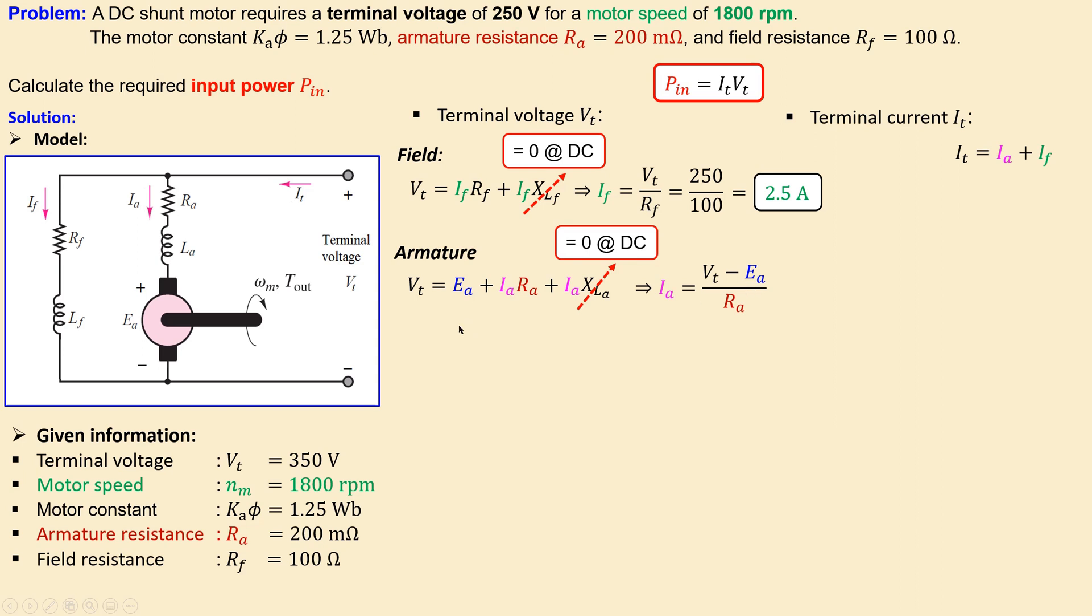So the back EMF is of course then calculated using this formula. This is the motor constant times the motor speed. But the motor speed must be in radians per second and not in rpm. So we need to rewrite this in radians per second. So the rpm given here must be then converted to radians per second using this formula: 2π over 60 times the given value in rpm. If you do that you will get 188.5 radians per second, very close to that value.